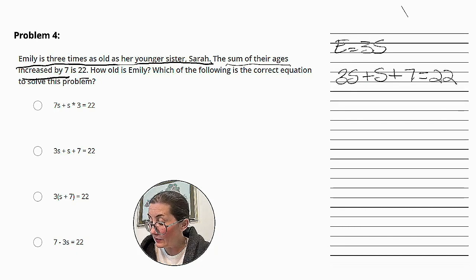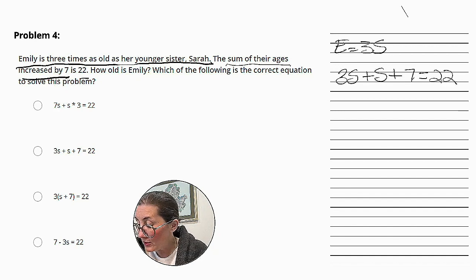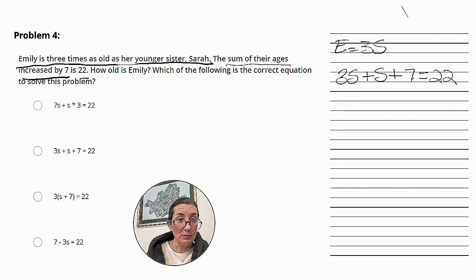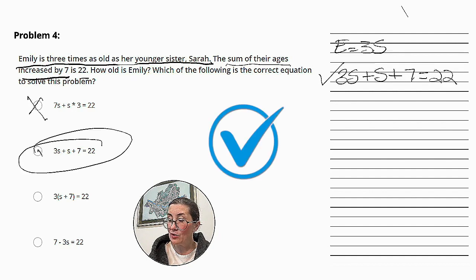Now let's look at the answers for the question. 7s plus s times 3 equals 22. No. 3s plus s plus 7 equals 22. That is what we have. And that is the correct answer.